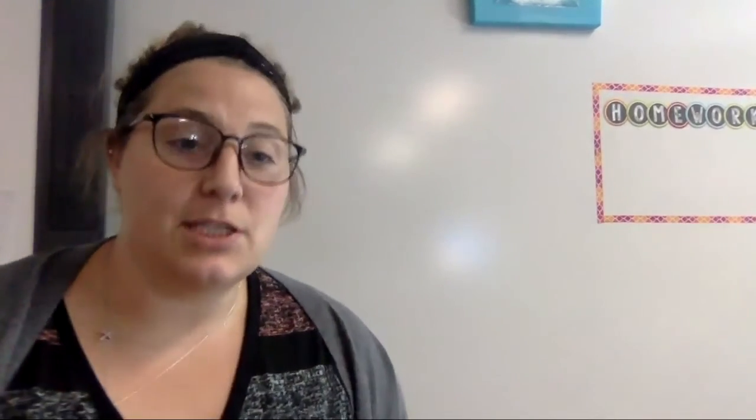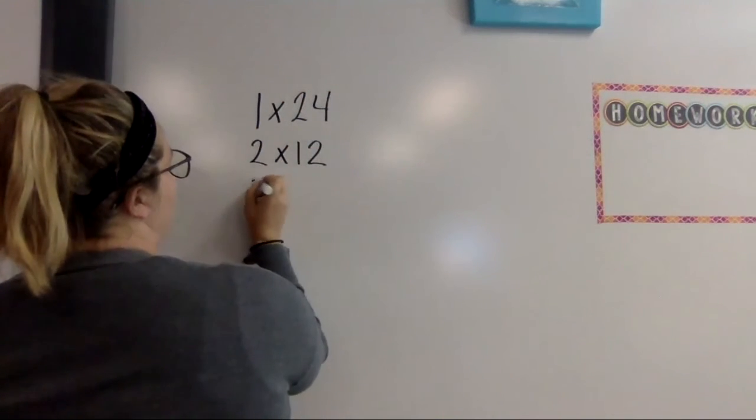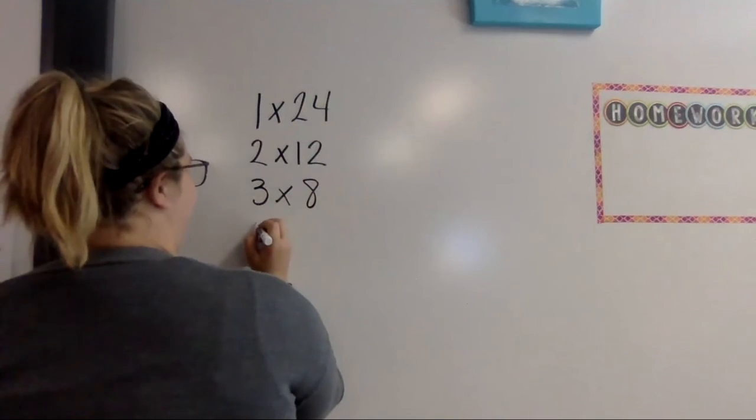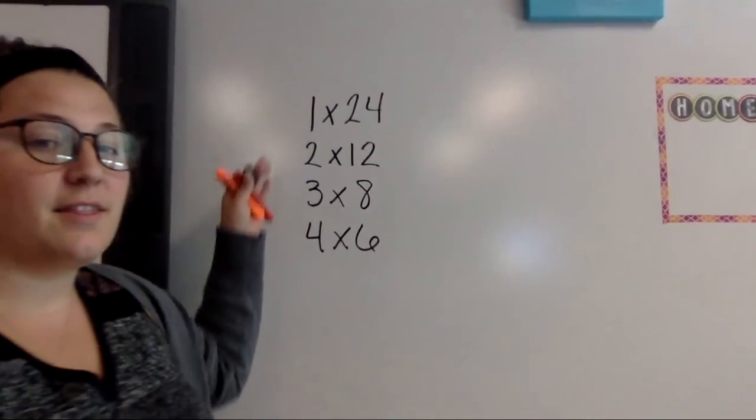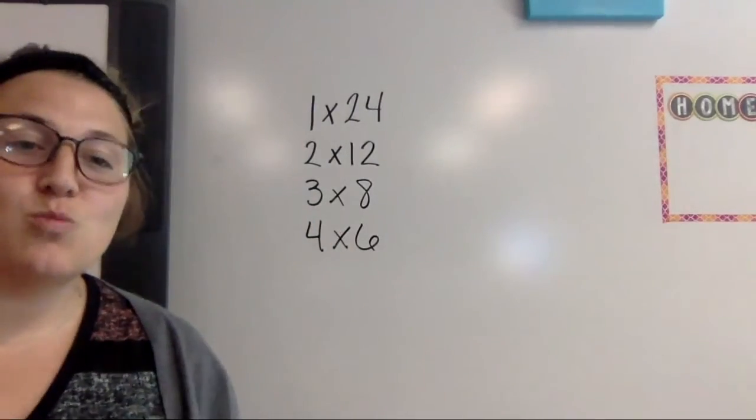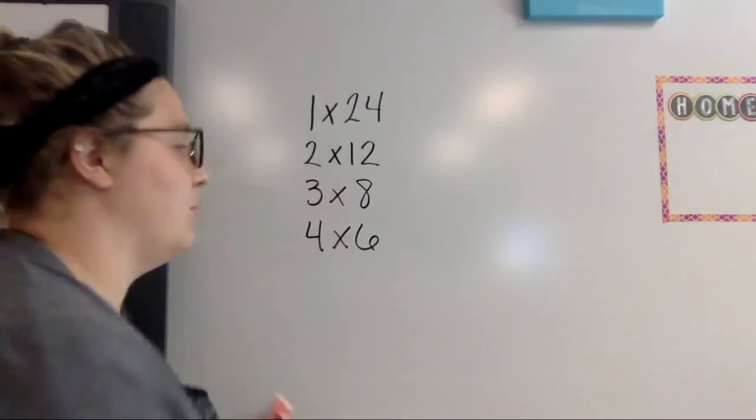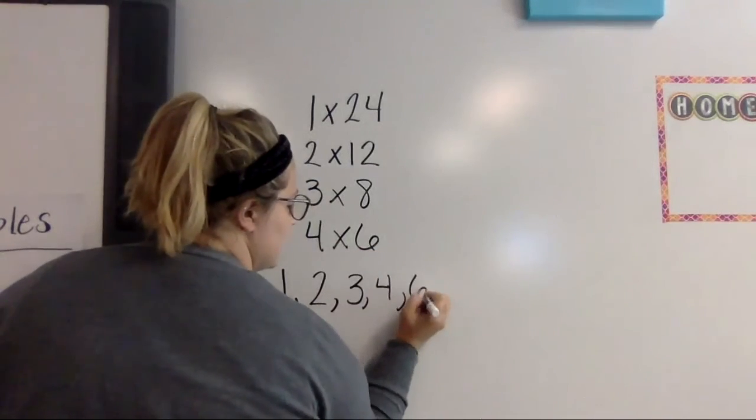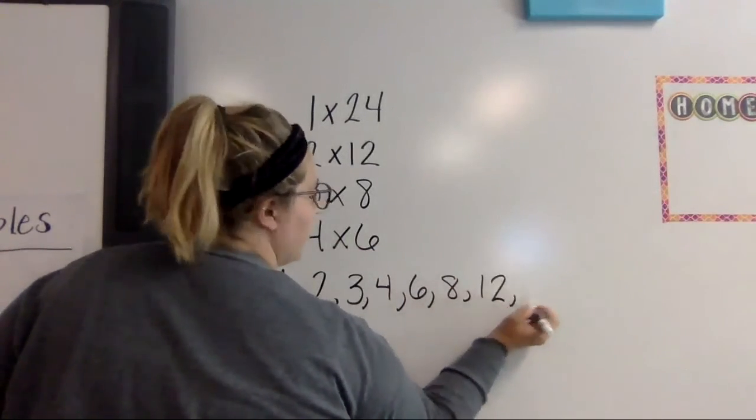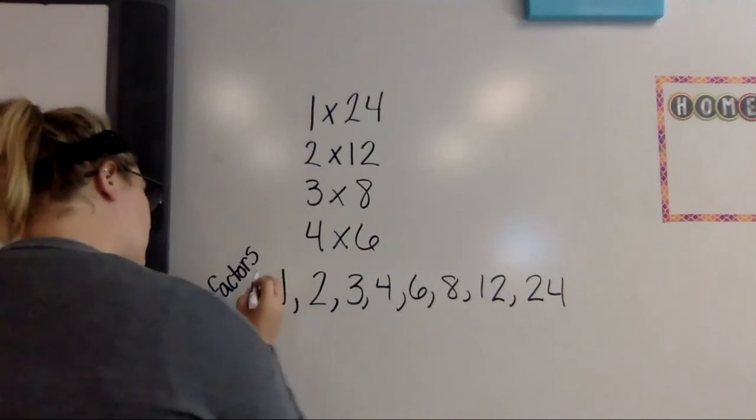So when you were solving for what dimensions you would use to make an array of 24 you were coming up with different combinations. So we came up with 1 times 24, 2 times 12, 3 times 8, and 4 times 6. All giving us the answer of 24. So these equations and these numbers what you multiply to get an answer is called a factor. So the factors of 24 would be 1, 2, 3, 4, 6, 8, 12, and 24. All of these factors of 24.